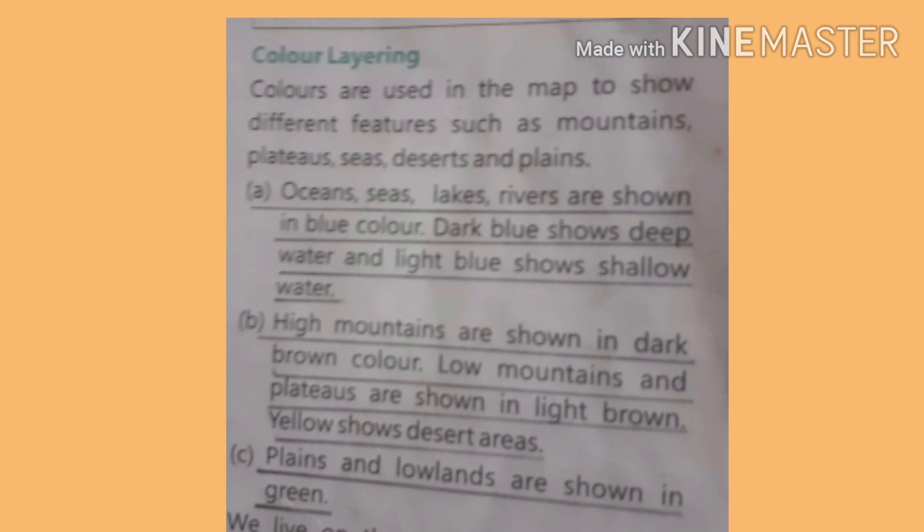Oceans, seas, lakes, and rivers are shown in blue — dark blue shows deep water and light blue shows shallow water. High mountains are shown in dark brown, while low mountains and plateaus are shown in light brown. Yellow shows desert areas, and sea plains and lowlands are shown in green.